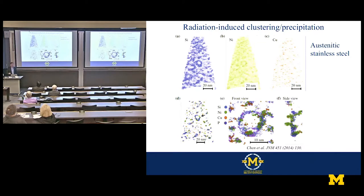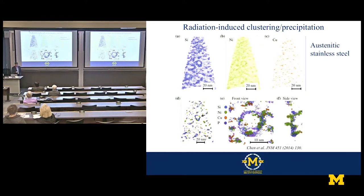Radiation-induced clustering and precipitates are also observed. Atom probe images from stainless steel after about 5 DPA of proton irradiation show clustering of nickel, silicon, and even copper precipitates. We published this work in 2011 — nobody had ever identified copper precipitates in stainless before. There's a little copper in stainless that comes out readily because it's quite insoluble. Atom probe tips also show dislocation loops with segregation and nickel atom clustering, which eventually turn into a precipitate.